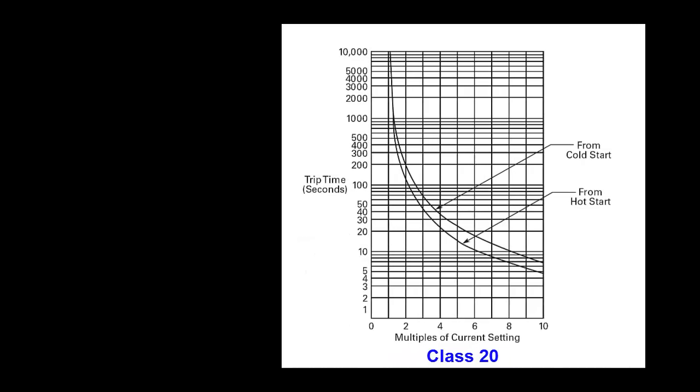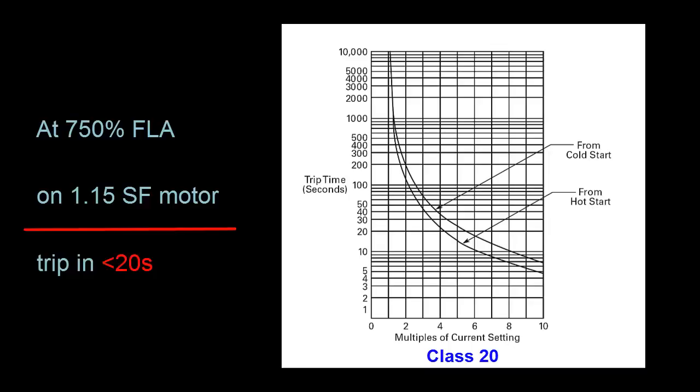This one I'm looking at now happens to be a trip class of 20. A trip class of 20 means that at a constant current that is 750% of the FLA current setting on a 1.15 service factor motor, the motor will not take more than 20 seconds to trip.